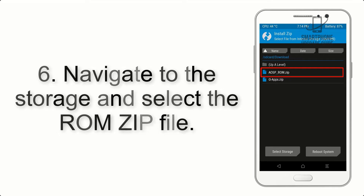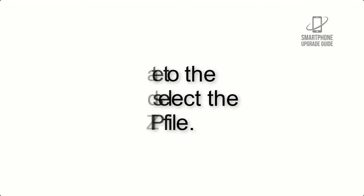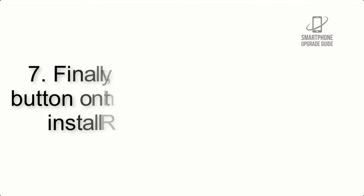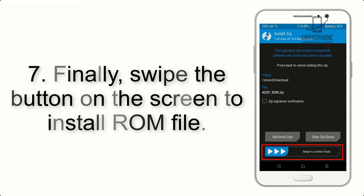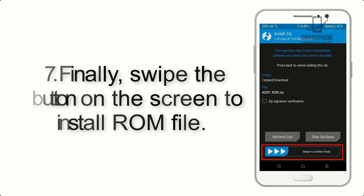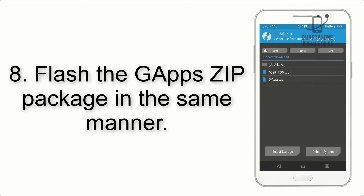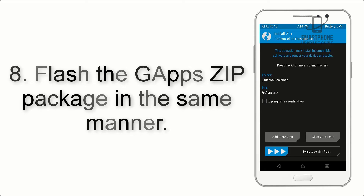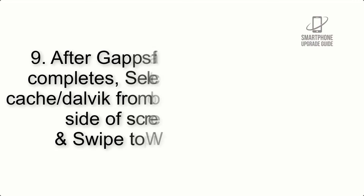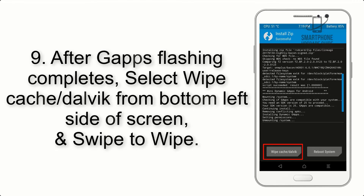Step 5: Go back to the recovery main screen and tap on the Install button. Step 6: Navigate to the storage and select the ROM zip file. Step 7: Finally, swipe the button on the screen to install the ROM file.